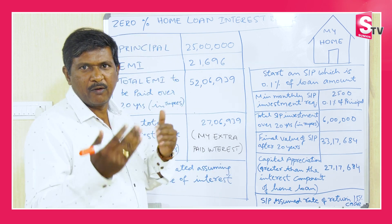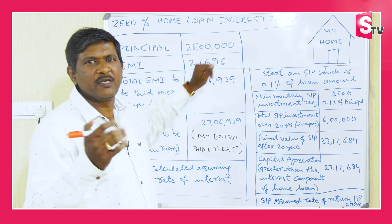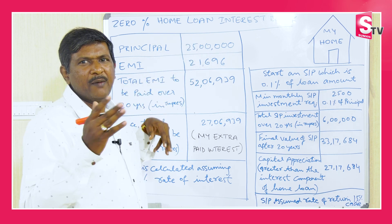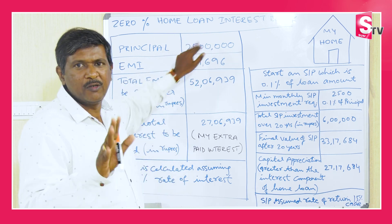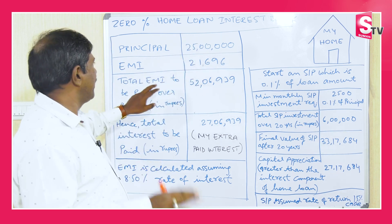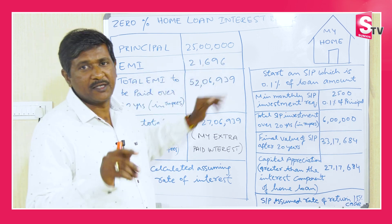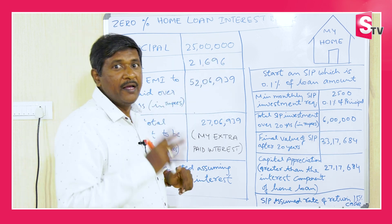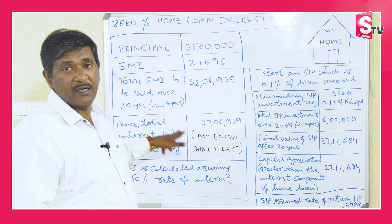Let's take an example with a principal in Bangalore. For example, we have a principal amount of 25 lakhs. The EMI for this is 21,696. The total EMI to be paid is over 20 years.